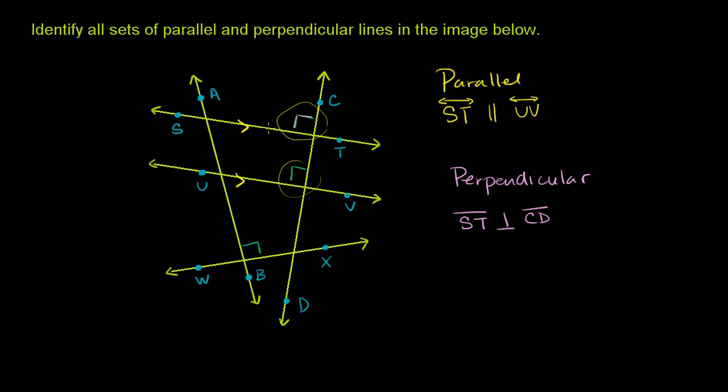By the exact same argument, line UV is perpendicular to CD. So UV, let me make sure I specify these as lines. Line UV is perpendicular to CD.